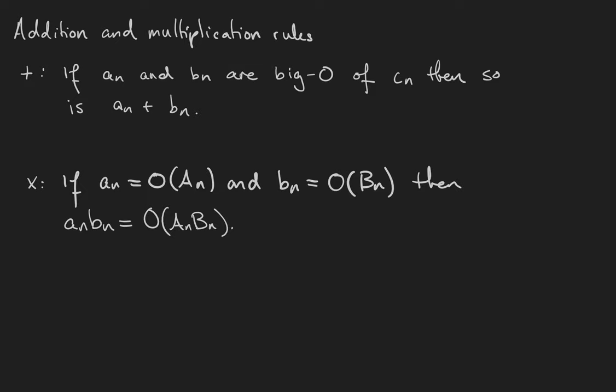If aN and bN are both big O of some sequence cN, then so is aN plus bN. This is our addition rule. In other words, you just need to look for the largest term.